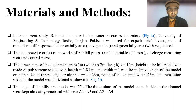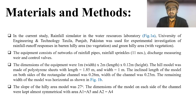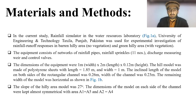Now I will discuss the materials and methods. In the current study, a rainfall simulator in the water resources laboratory at University of Engineering and Technology in Pakistan was used for experimental investigation of rainfall runoff responses in barren hilly areas (without vegetation) and green hilly areas (with vegetation). The equipment consists of a network of rainfall pipes and 11 rainfall sprinklers, discharge measuring weir, and control valves. The dimensions of the equipment were: width 1 meter, length 2 meters, and depth of the tank 0.12 meter.